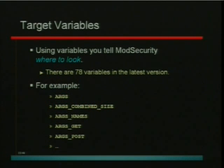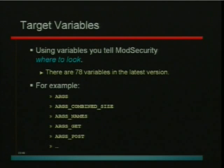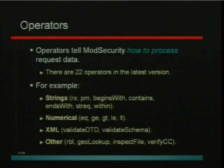What makes ModSecurity easy to use is that we have 78 variables you can use — pretty much a variable for every single thing in a request or response. You just look at the table, see what variable you're interested in, and write it in a rule. Then you choose how to process the data using operators. We have 22 operators. Most people use regular expressions, but there are many others.